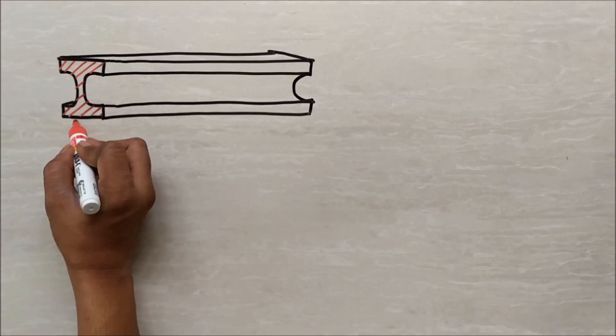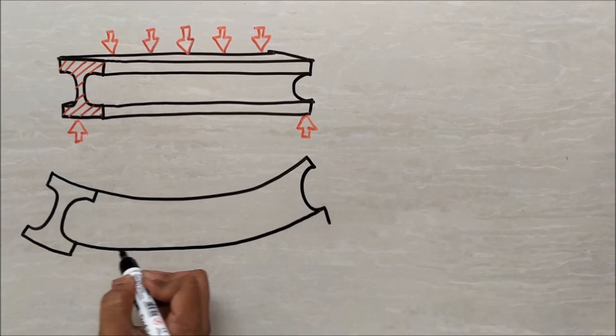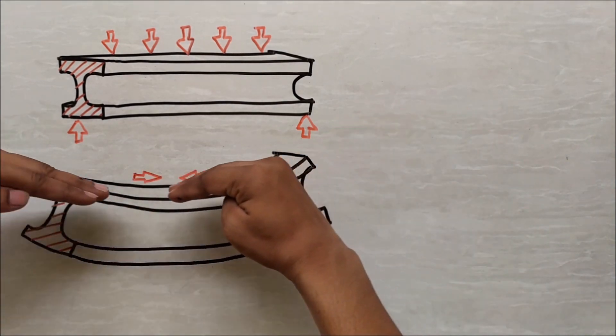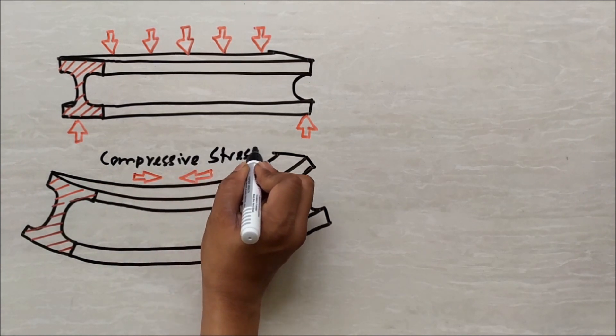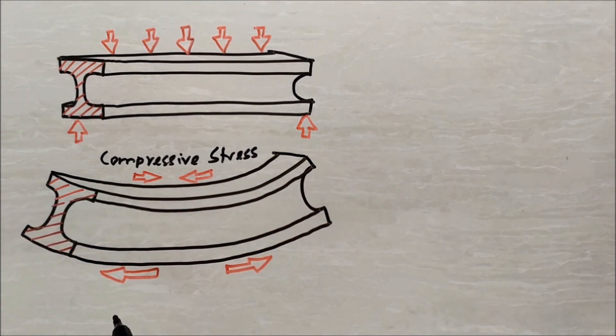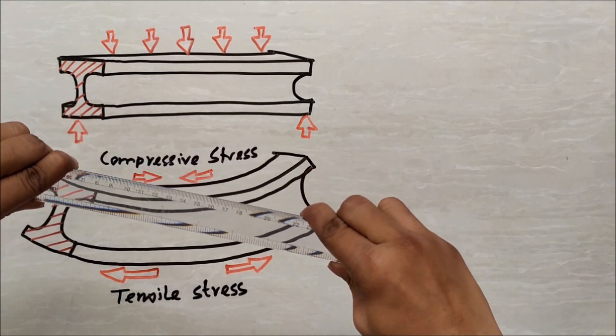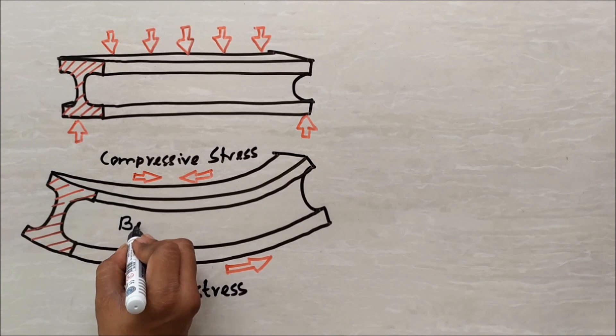In this I section, when load will act as simply supported, bending compression will be at the top section. It resists the compressive stress. Bending tension will be at the bottom section. It resists tensile stress. And the mid portion will resist the beam to bend, which is the bending stress.